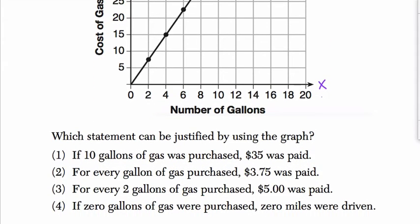Which statement can we justify using the graph. I noticed that before I look at these, all of these are about slope. Every single one of these is about unit rate, which is slope. So it's unit rate or slope.